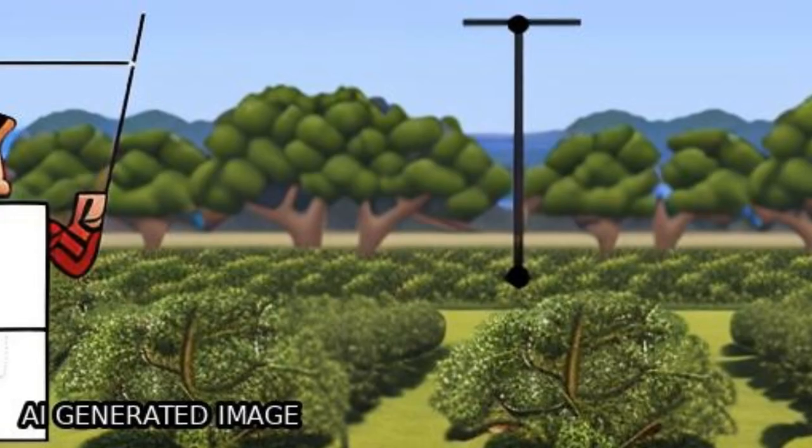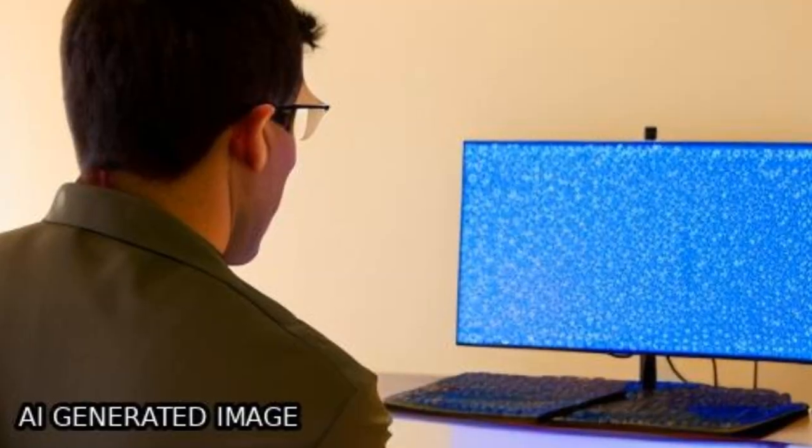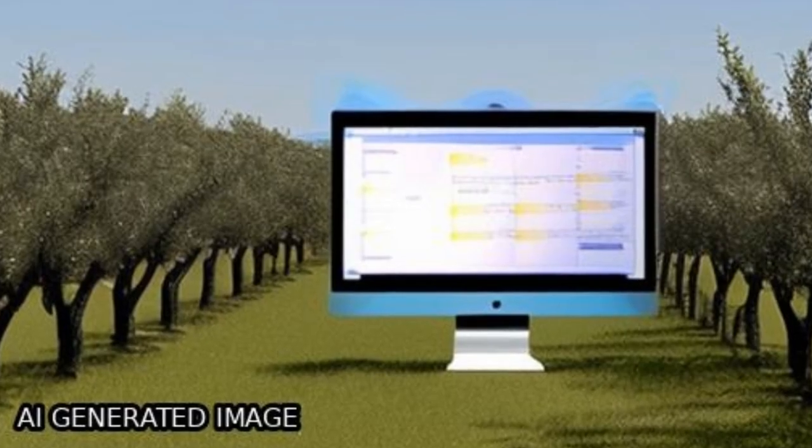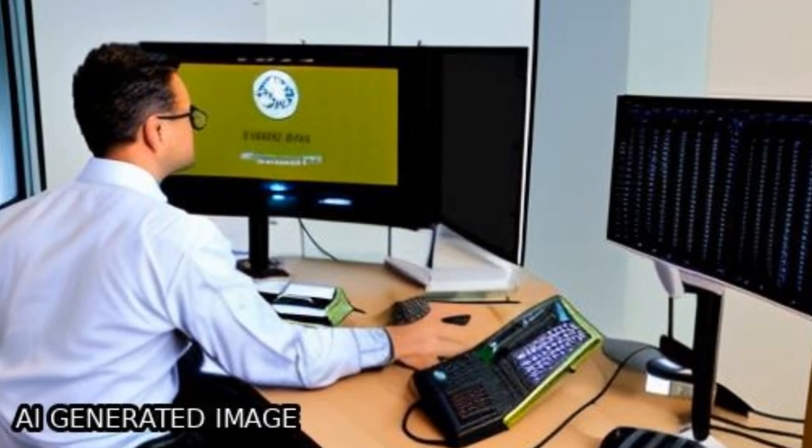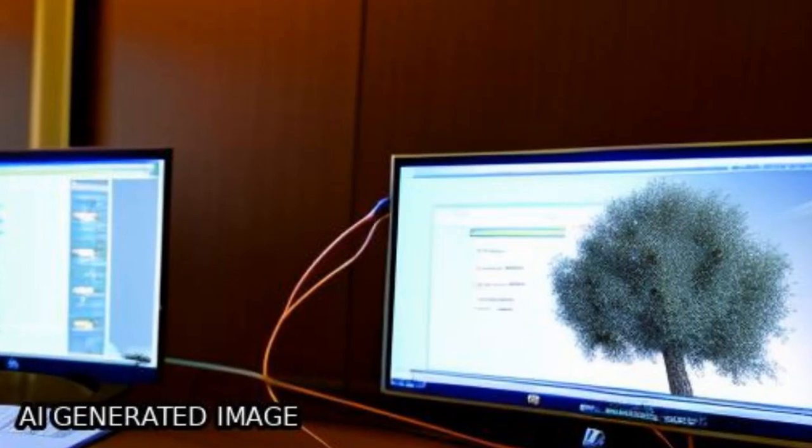This study presents an automatic approach for olive tree dendrometric parameter estimation from airborne laser scanning (ALS) data using a unique combination of the alpha shape algorithm applied to normalized point cloud and principal component analysis.